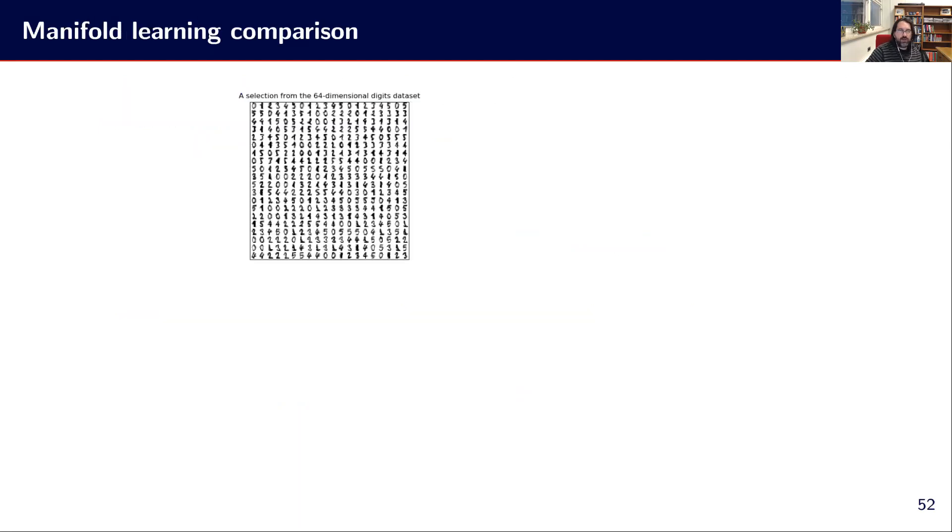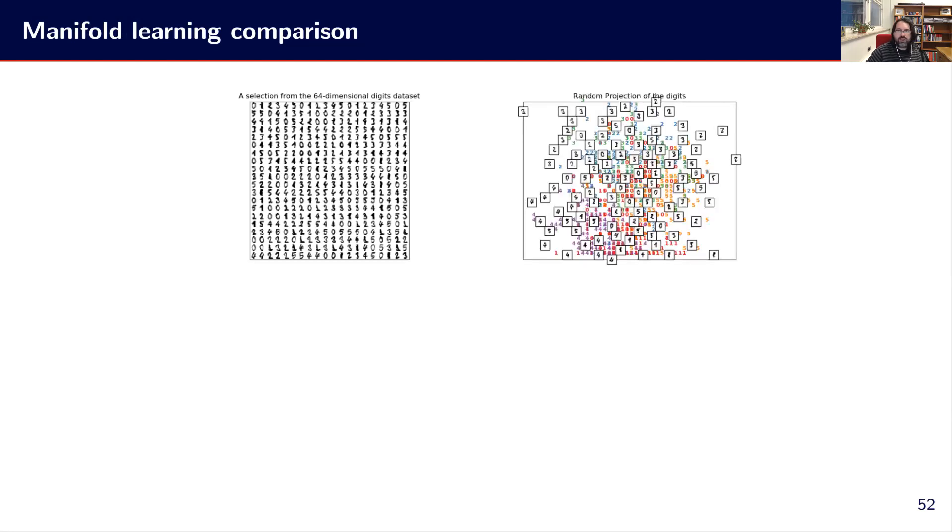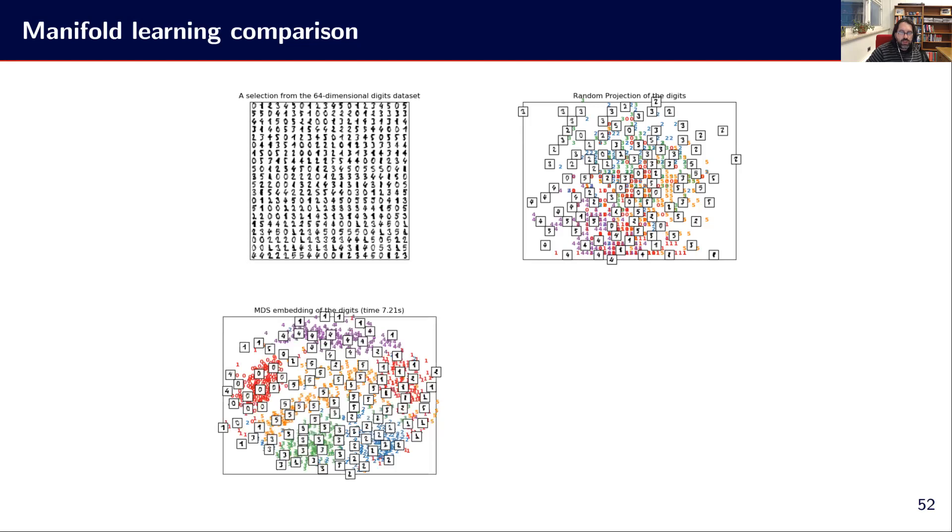So for comparing, I would say different approaches for manifold learning. We know we have here a selection of 64-dimensional digits data sets. So we have all these digits. If we are using some random projection of that space in 2D, we've got something that is quite random. If we are making use of multidimensional scaling, we see something that is quite current. We see that the classes, we have the zero here, we have the four here. I think we have the three here and so on. So without having the labels, it is still kind of preserved.